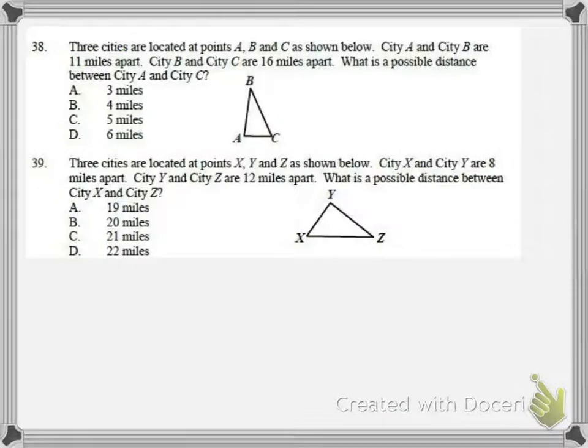For 38, we have three cities. City A and B is 11 apart. B and C are 16. We need to find the possible difference. This is just like number 37 on the last screen, but instead of saying the longest side and making a ratio, what we're going to do here is take the difference of those two sides and the sum of those two sides, and the value is going to be somewhere between them. So the difference, 16 minus 11, is 5, and the sum is 27. So our third side has to be somewhere between there.